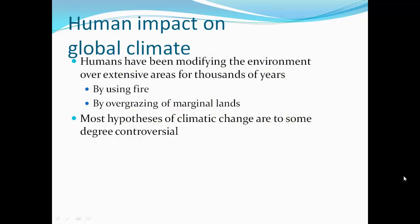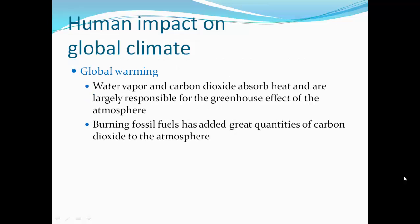Human impact on global climate. Humans have been modifying the environment over extensive areas for thousands of years — by using fires and using forests for fuel, and through overgrazing of marginal lands bordering arid regions. Most hypotheses of climate change are to some degree controversial, though we may be moving away from controversy at this point. Global warming: water vapor and carbon dioxide absorb heat and are largely responsible for the greenhouse effect of the atmosphere. Burning fossil fuels has added great quantities of carbon dioxide to our atmosphere, increasing our greenhouse effect.